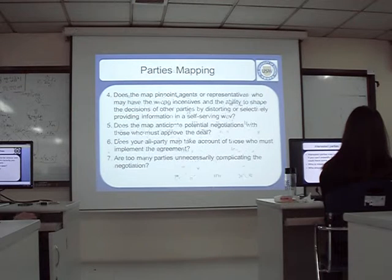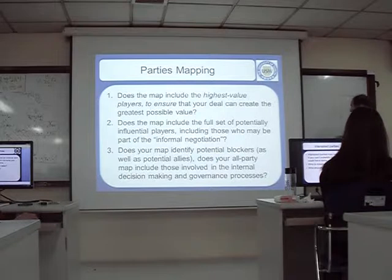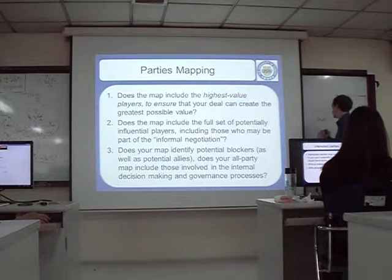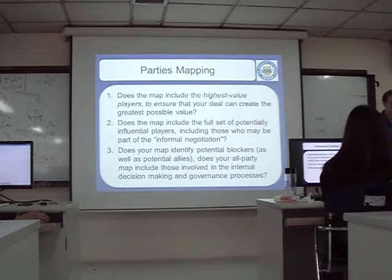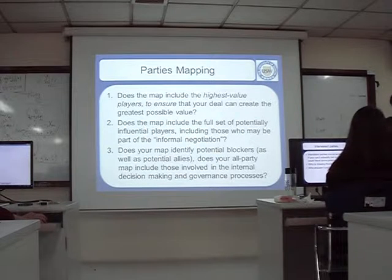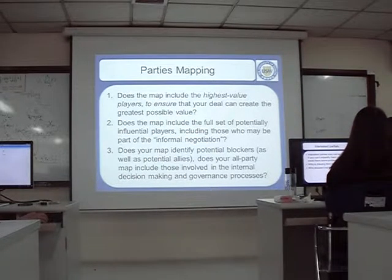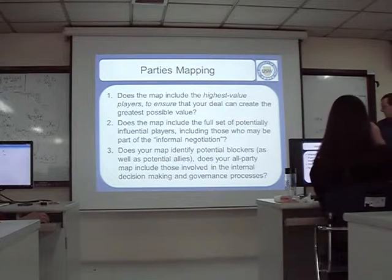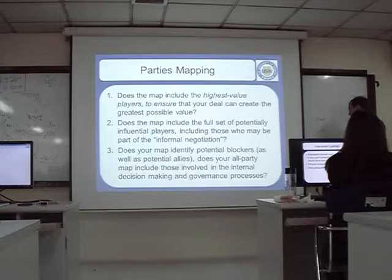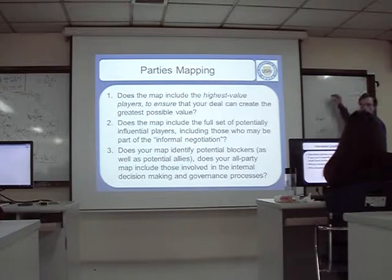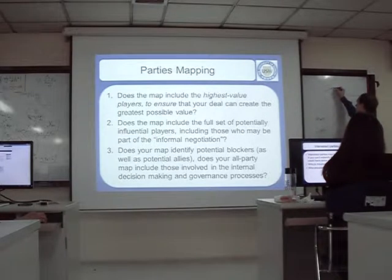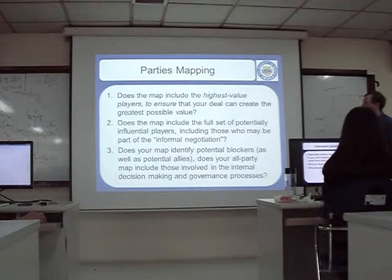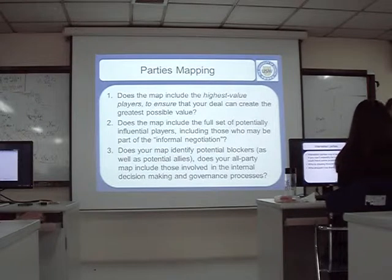We have seven steps to map our parties. What's the difference between mapping and listing? A map is more specific than a list — it shows the relationships. List is just a sequence, but a map looks more like a diagram. In the mapping we're also interested in the relationships between people — how would they relate to each other?